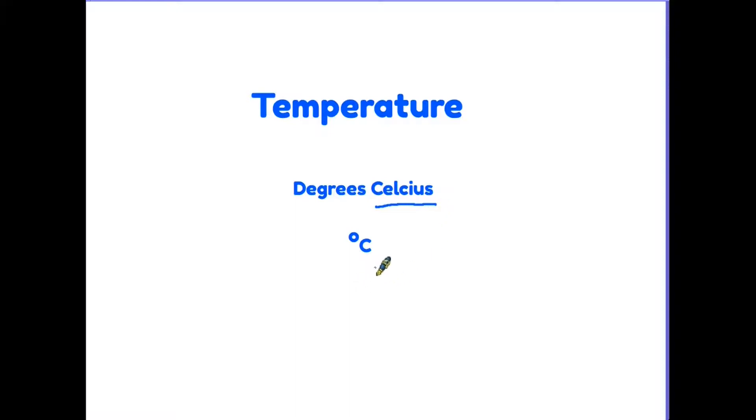And here at the bottom is how we write it. The symbol degrees is a little zero which we put after the number and C for Celsius. So for instance if something is 12 degrees it would be 12 degrees Celsius, 12 degrees C.